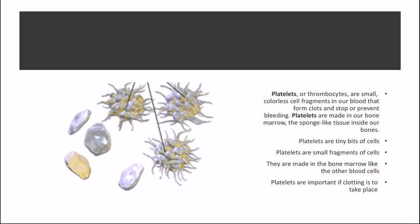Platelets, or thrombocytes, are small colorless cell fragments in our blood that form clots and stop or prevent bleeding. Platelets are made in our bone marrow. Platelets are small fragments of cells.